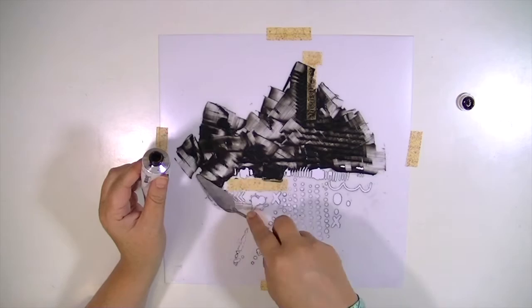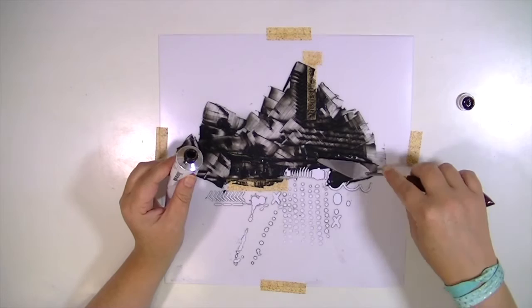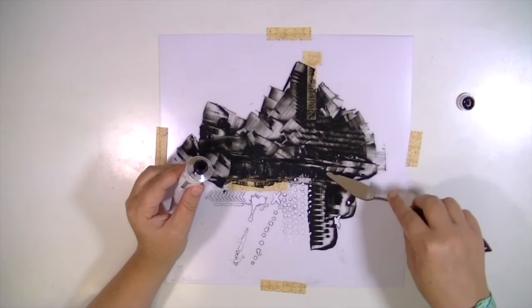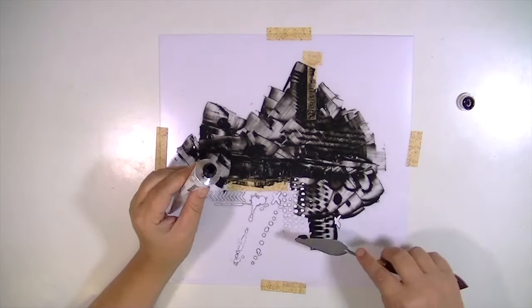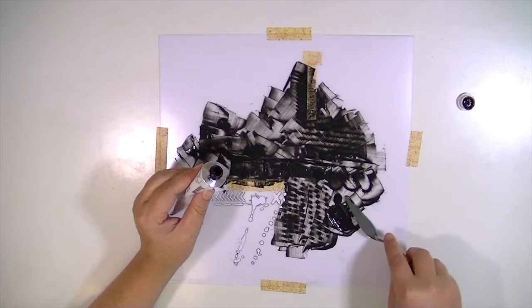That's the reason why I have all the washi tape around the edge, to keep the stencil really secure to the paper so that it doesn't move at all. Because if it moves, the paint is going to seep underneath, especially with a stencil this intricate. The heavier bodied medium you use, the less likelihood of that.